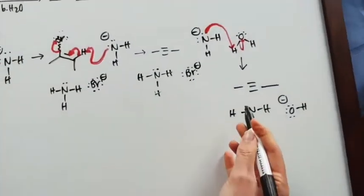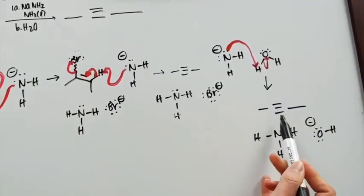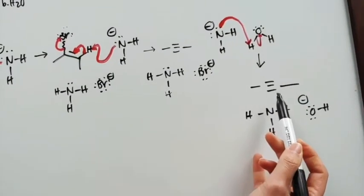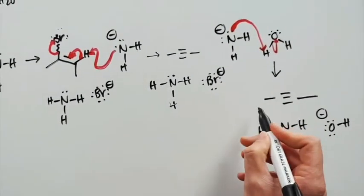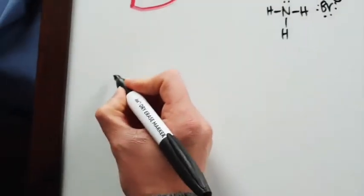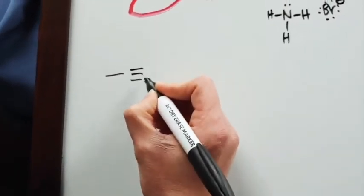Now like I said, some of you may be wondering, well, what happens when we have a terminal alkyne? Let's assume that it is terminal. So this is how it would change if it was terminal. So let's say we have this. We would have our hydrogen right here.